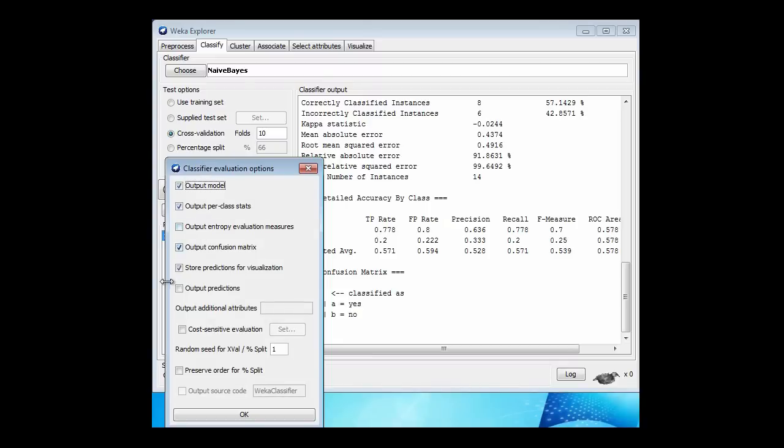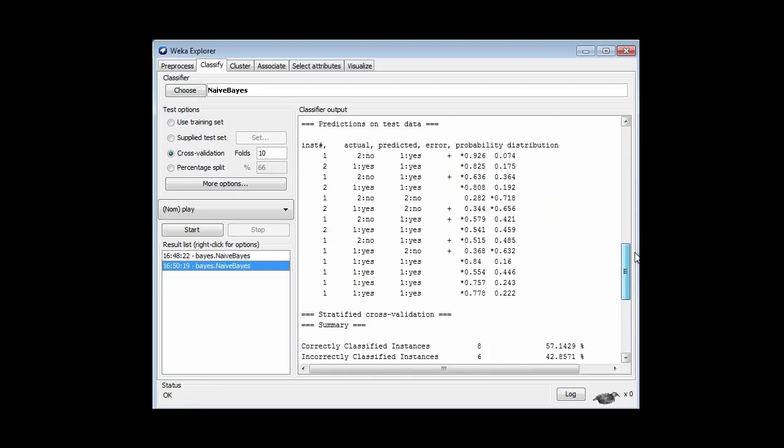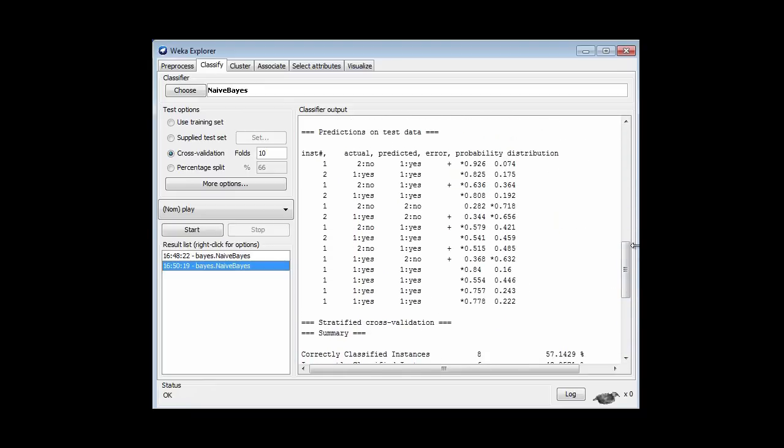On the More Options menu, I'm going to output the predictions. Let's just run Naive Bayes again. I'm interested in this table of predictions. These are the 14 instances. For this instance, which is actually a No, Naive Bayes had a prediction probability of 92% for the Yes class and 0.074 for the No class. These two things add up to 1. Because the probability for the Yes class was greater than the probability for the No class, Naive Bayes predicted a Yes. Incorrectly, as it turns out, because it was actually a No. That's why there's a plus in this error column. That's the way Naive Bayes gets all of its predictions. It takes the Yes probability and the No probability, and it sees which is larger, and predicts a Yes or a No accordingly.